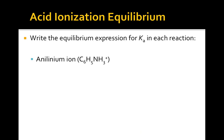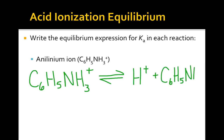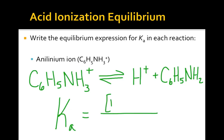What about this, although unfamiliar, acid, anilinium? Ignoring the hydrogens that are attached to the carbon atoms, all we need to do is remove one of the hydrogen atoms attached to the nitrogen atom. This would produce a hydrogen ion and the neutral molecule C6H5NH2. The equilibrium expression would be just as shown here with products over reactants.